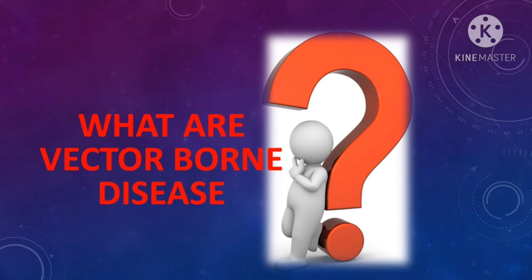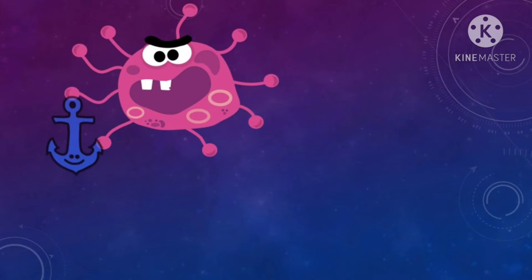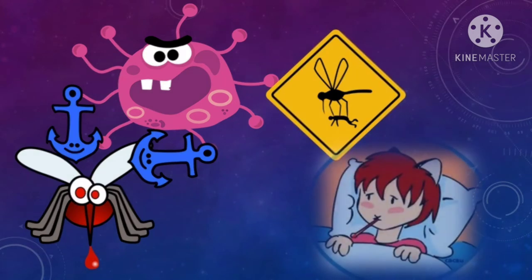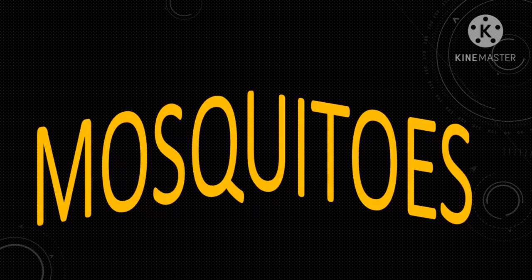Vector-borne diseases are infections transmitted by the bite of arthropods like mosquitoes, ticks, bugs, and flies, which themselves are infected while feeding on the blood of infected vertebrate hosts. When a vector bites an infected human being, the pathogen — which may be a bacteria, virus, or parasite — piggybacks onto the insect and makes it infected too. When this infected insect bites a healthy human, it causes sickness.